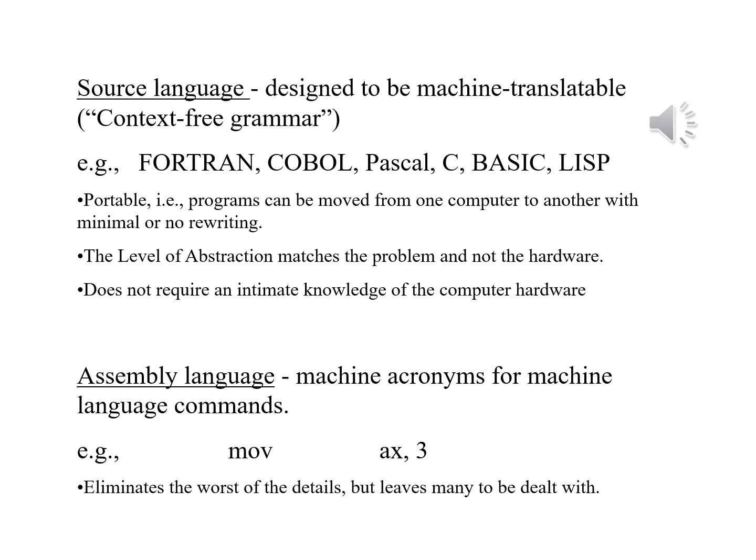The advantage of source languages is that they should be portable — something we can move from one computer to another with minimal or no rewriting at all. The only thing we need is a translator, be it a compiler or an interpreter, that can allow us to run it on another machine. The level of abstraction should match that of the problem and not that of the hardware, nor should we require an intimate knowledge of the computer's hardware for this to work.